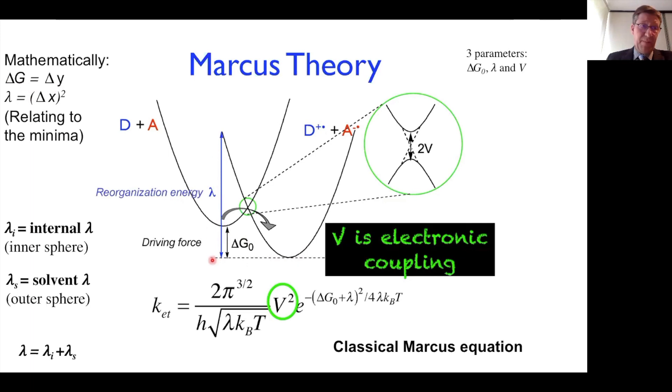The reorganization energy, a very important contribution from Marcus, contains an inner sphere and an outer sphere. We have an internal or inner sphere reorganization energy and an outer sphere solvent reorganization energy. The difference in nuclear coordinates, the delta X of the two minima, if we square this delta X, then we get the reorganization energy. It is the energy associated with converting one state into the nuclear coordinates of the other. If we go from here, we go all the way up.